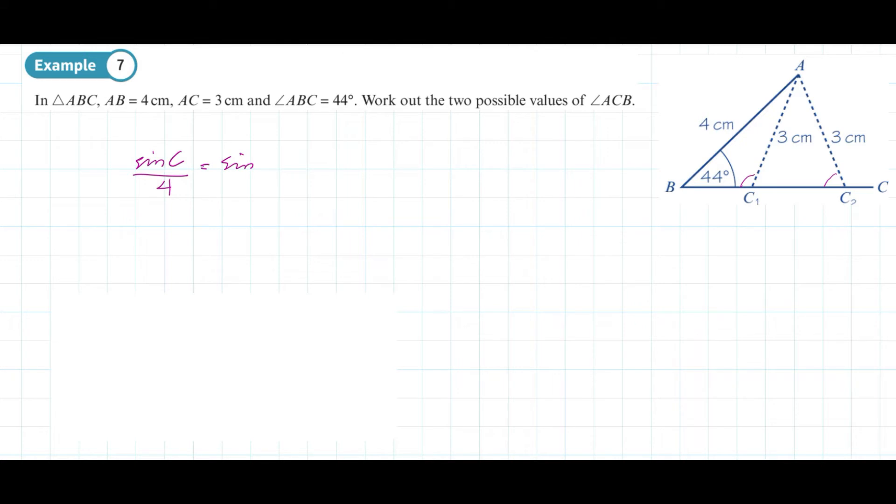This equals sine of 44 degrees divided by the length that's opposite it, which is 3 centimeters. We can multiply both sides by 4 to get sine of c equals 4 sine 44 degrees over 3. Then we can do sine to the minus 1 of that to come up with c as being 67.9 degrees to 3 significant figures.